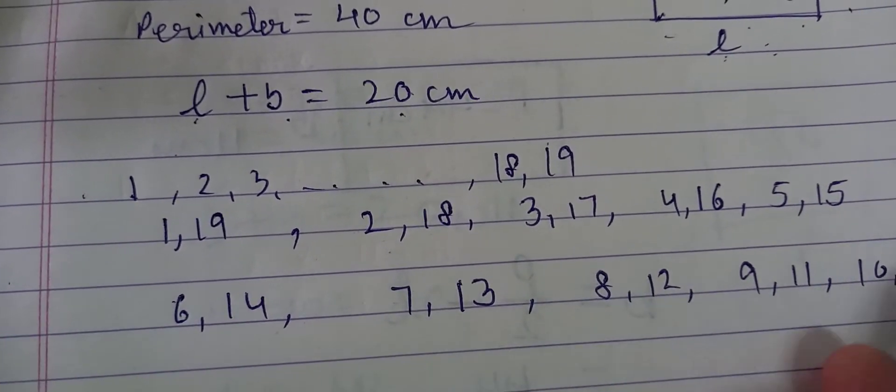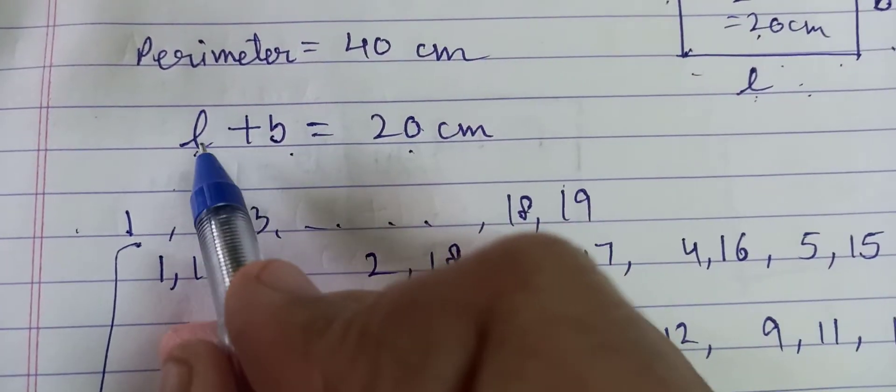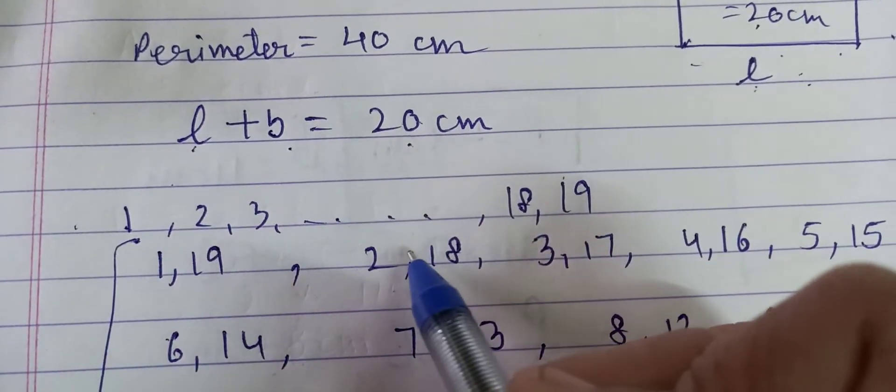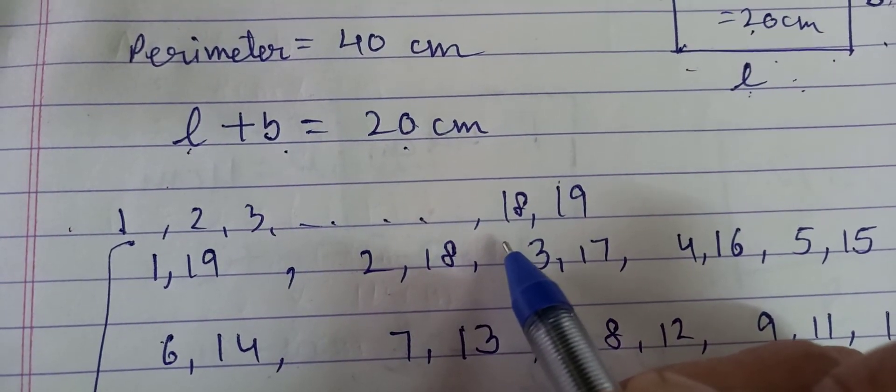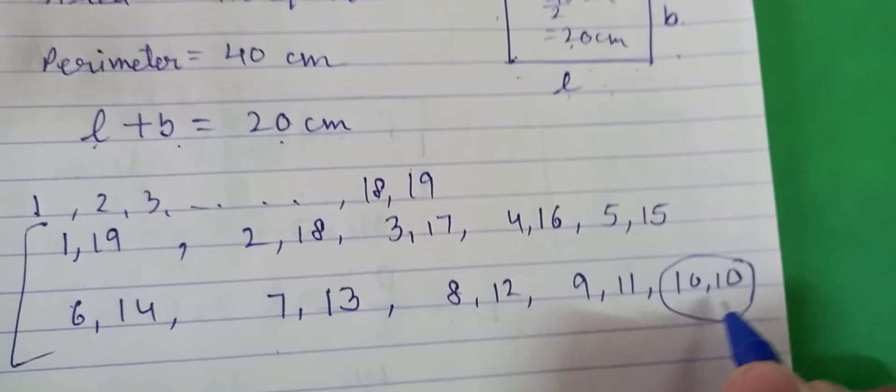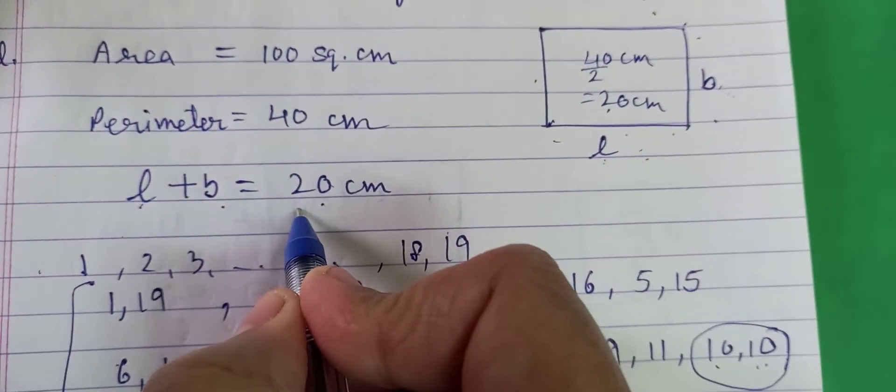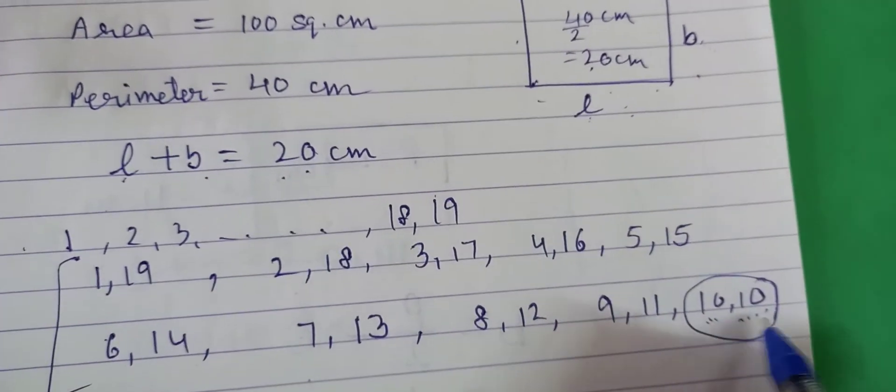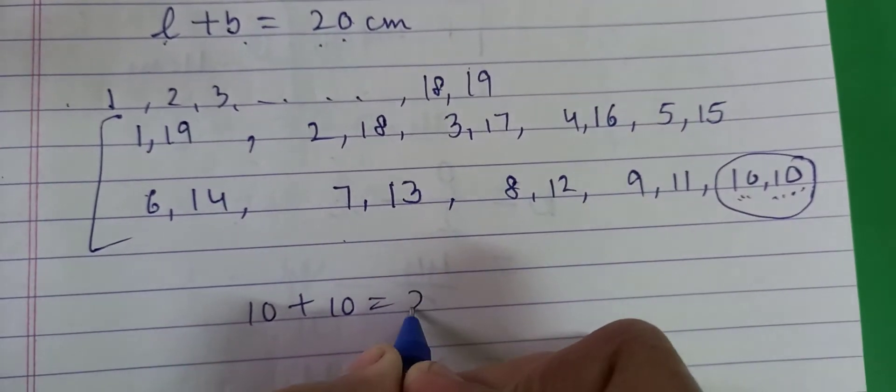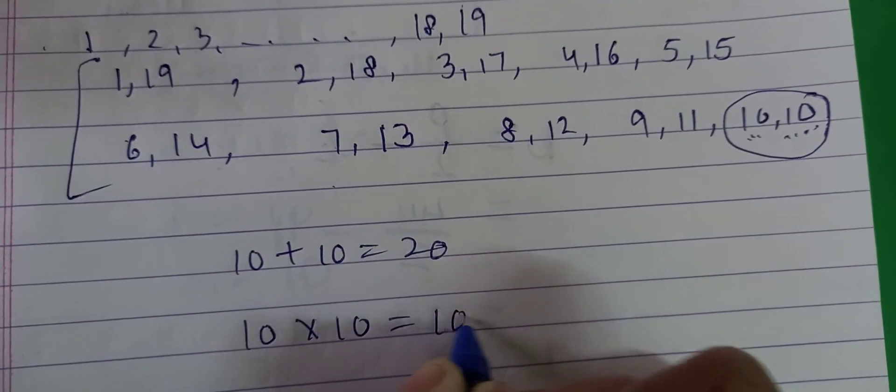ये वाले सारे हमारे pair बन रहे हैं, जिनका sum करके देखें, तो 20 आ रहा है. बट अब इसमें से सिर्फ यही एक number का pair ऐसा है, length और breadth जिनको plus करके तो 20 आ रहा है और multiply करके 100 आ रहा है. 10 plus 10 is equal to 20 and 10 multiplied 10 is equal to 100.